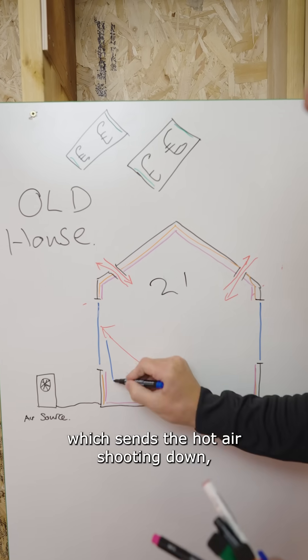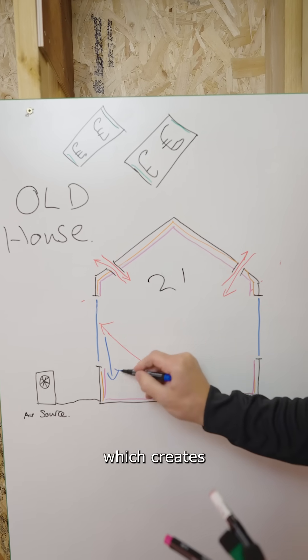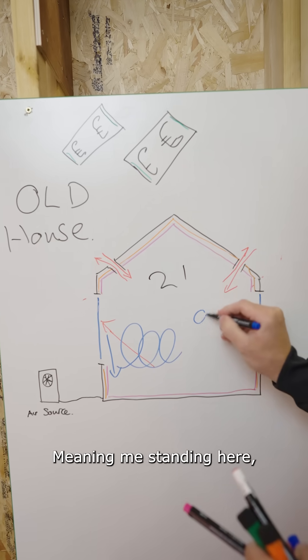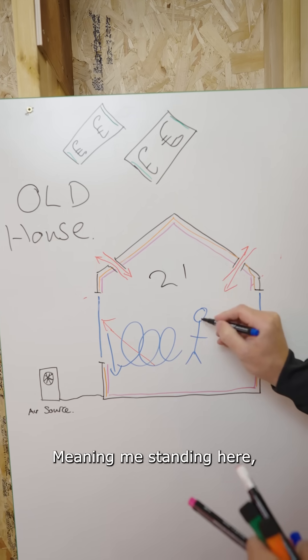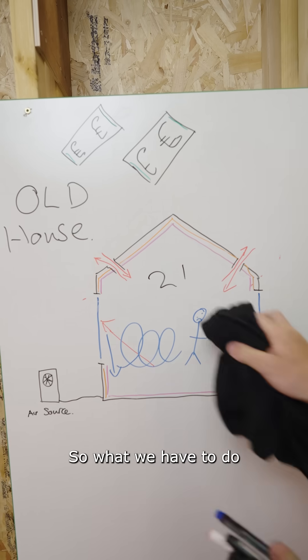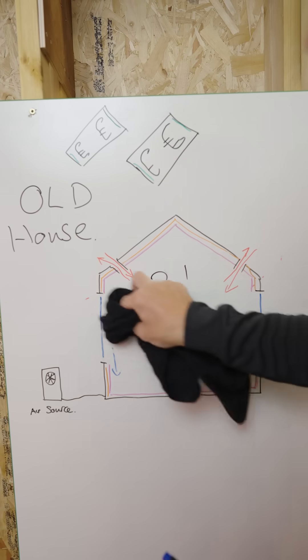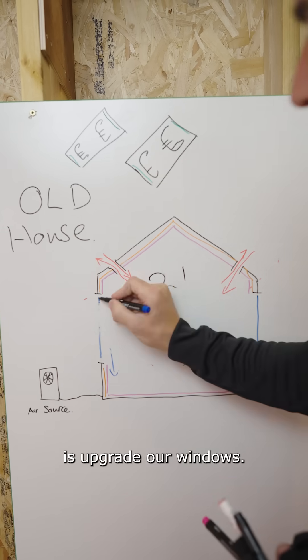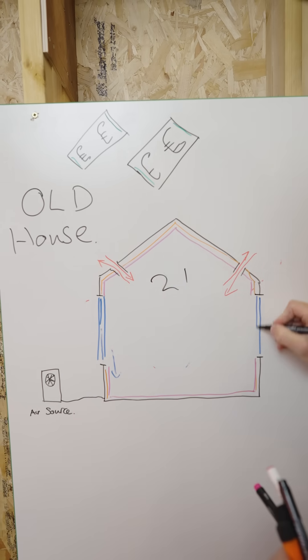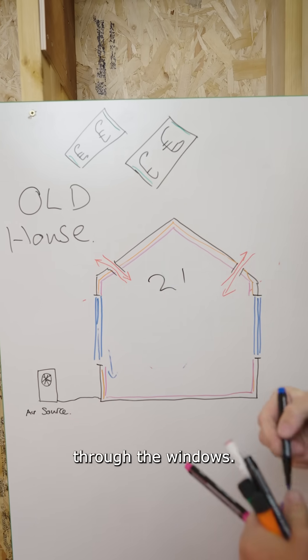This sends the hot air shooting down, which creates this sort of movement of air within the building. Meaning me standing here, I feel cold. So what we have to do is upgrade our windows. We've got triple glazed windows. We're not losing that energy through the windows.